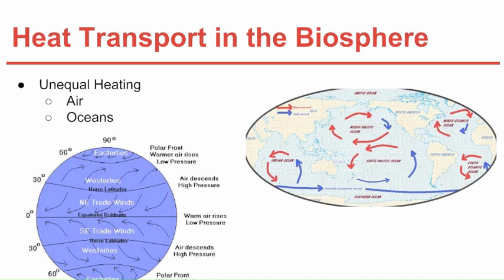Heat transport in the biosphere: because of unequal heating, both air and water heat differently, which results in wind and ocean currents. As you can see from the two diagrams, the air up north is colder, so it sinks down and is then heated by the equator and rises up, creating global winds. Similarly in the ocean, cold water sinks to the bottom and travels along the ocean floor until it reaches warmer climates, then heats up and rises to the surface.